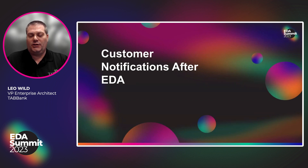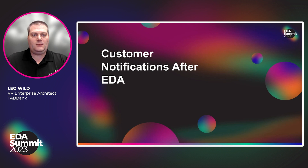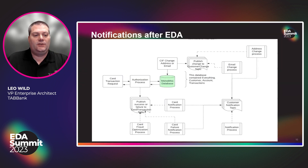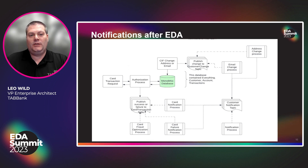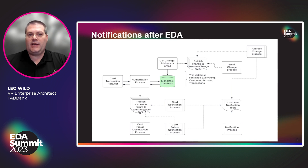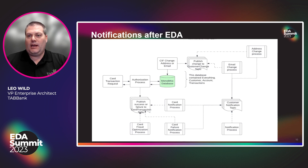We architected our solution using Solace in an event-driven architecture because it really fit the way we wanted to grow our architecture in the future. The initial flow is very similar — card transactions and customer changes still go into a monolithic database at Tab currently — but we added pieces to those processes that publish information out to topics in our Solace environment. For the card authorization process, we publish out to a card transaction topic, and from there our card notification process picks those transactions off as fast as they come in. It's now dealing with one record at a time, which is much simpler to track and monitor.